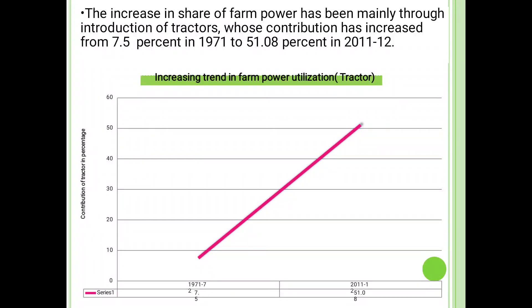In the vertical line, the contribution of tractor in percentage is indicated, and the horizontal line shows the year. The contribution of tractor in percentage is shown as 0%, 10%, 20%, 30%, 40%, 50%, and 60%. The years shown are 1971, 2011, and 2008. This red line indicates the graph showing how it increased from lower to higher range.